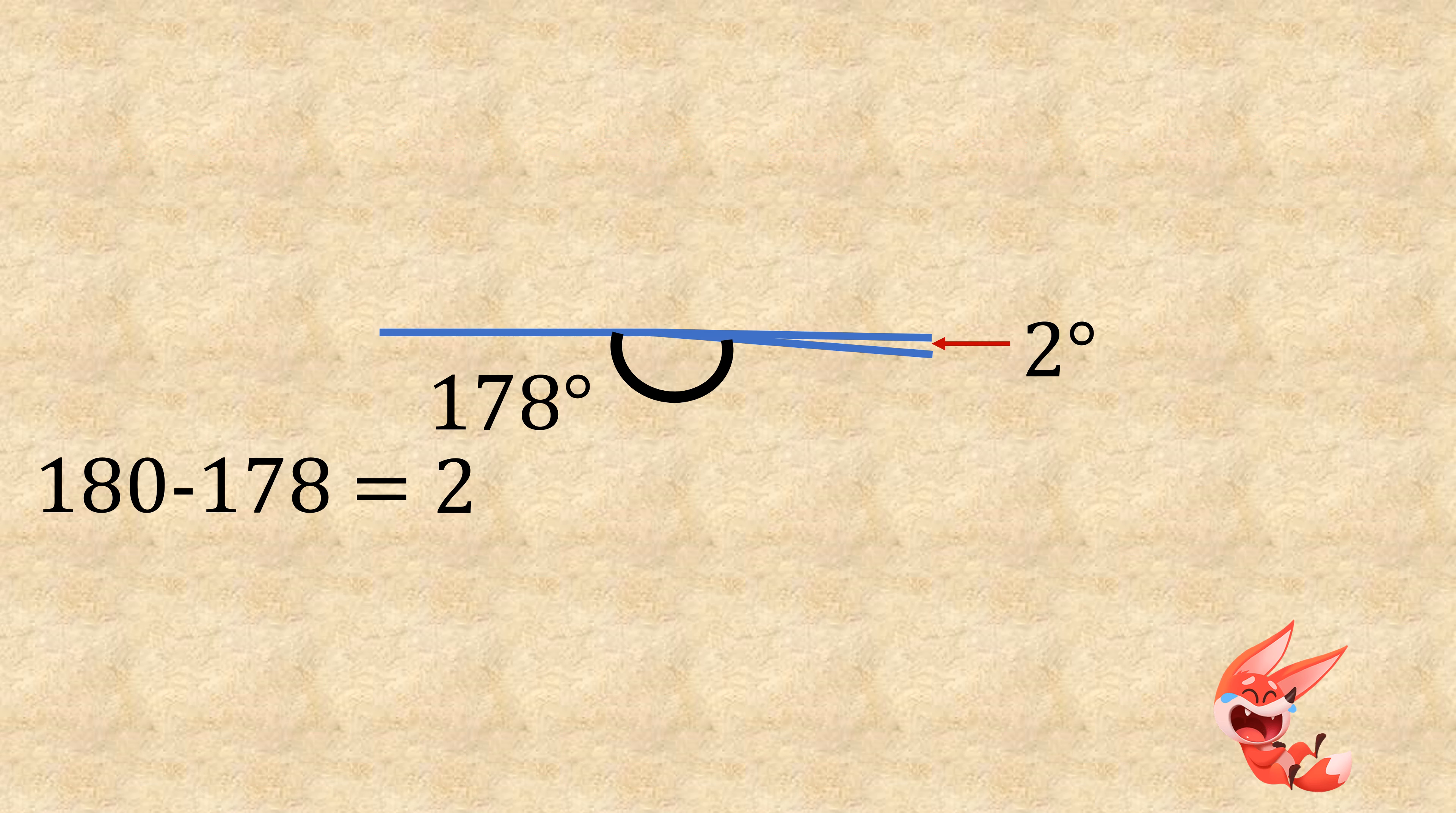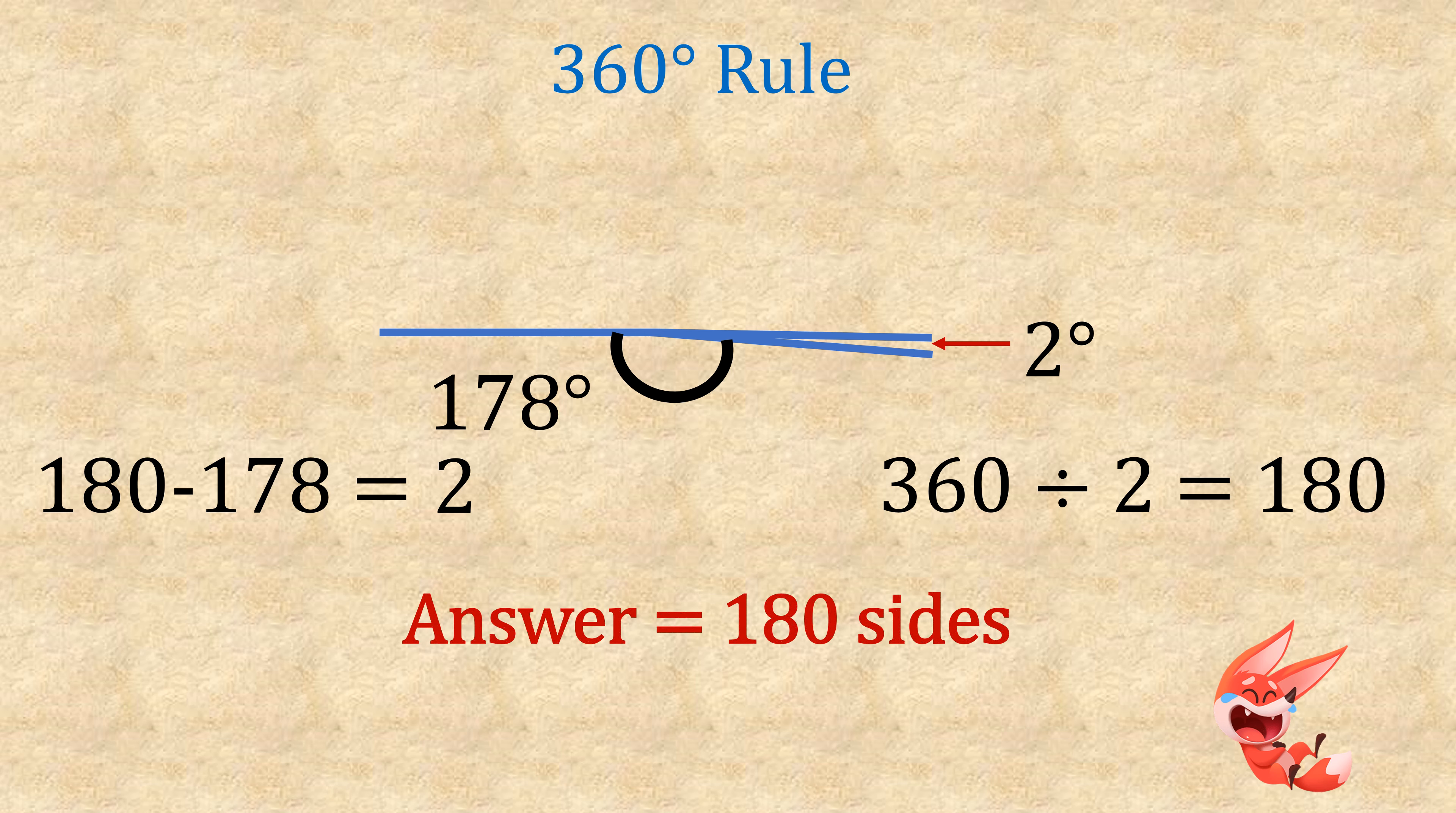We do 360 divided by 2, which gives us 180. So for this answer, there are actually 180 sides to the polygon.